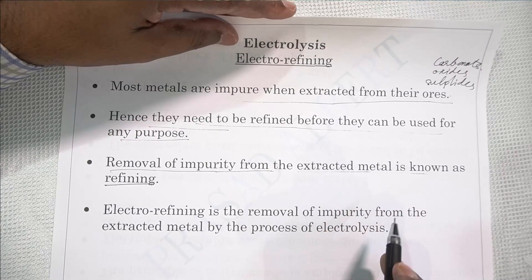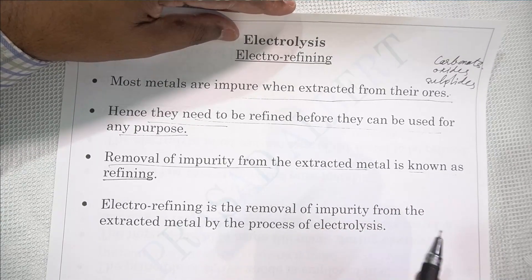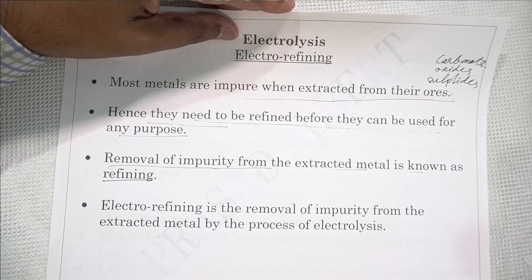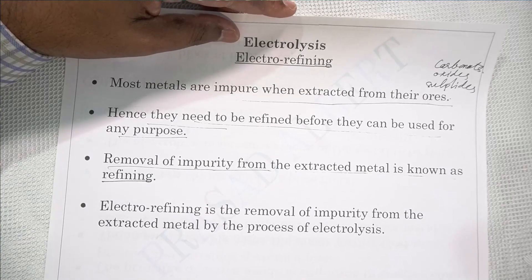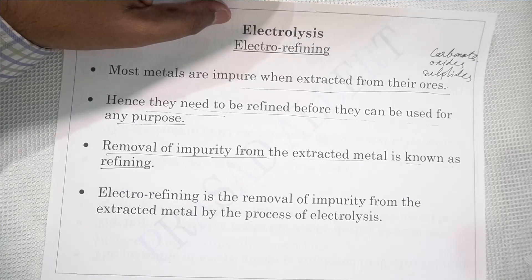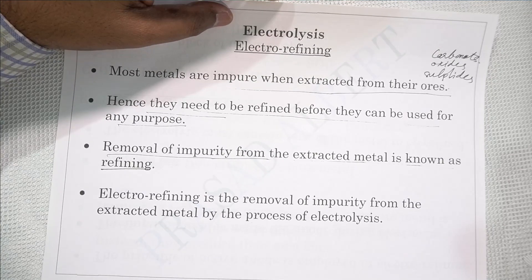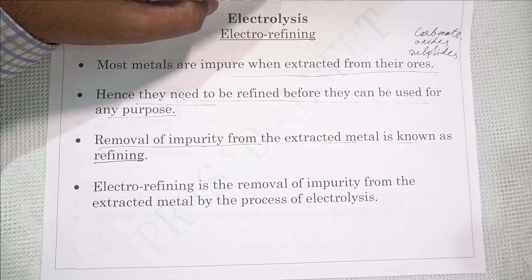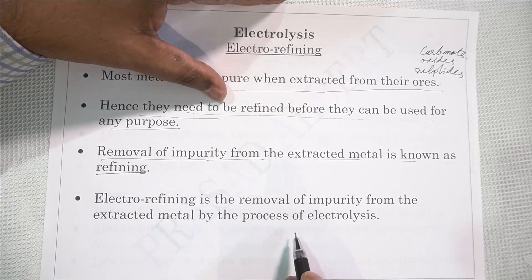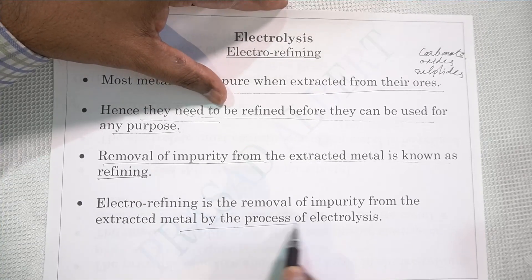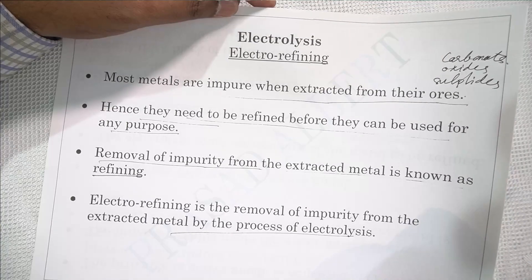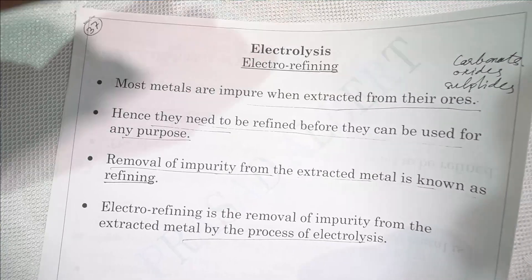Electrorefining is the removal of impurities using electrolysis. That is, if refining of a metal is done by the process of electrolysis, then it is known as electrorefining.